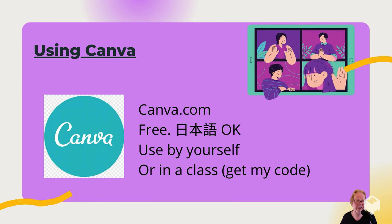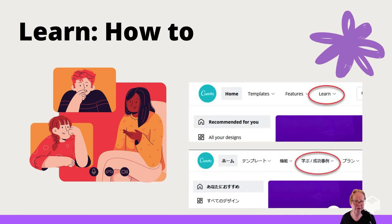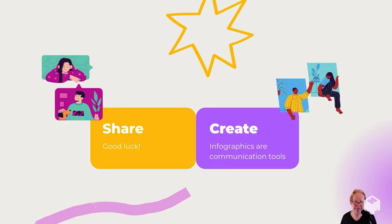I use a tool called Canva. It's at Canva.com. It works in Japanese and in English, and it's free. You can use it by yourself, or you can use it in a class like me. Note that the support is also in Japanese. You can find out how to learn more by using the Learn section or the Gakubu there. And please remember that infographics are a great way to communicate in English, because the graphics help the information and the information helps the graphics. Thank you.